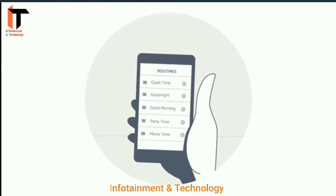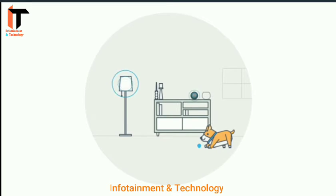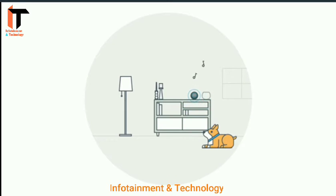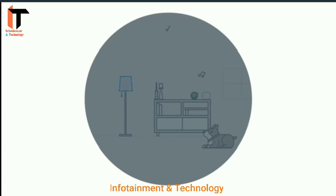You can automate your smart home using the Alexa app. After setting up your compatible devices, just create a routine that will help you do multiple things with one phrase. For example, say Alexa, goodnight, to play relaxing music and turn off the lights.